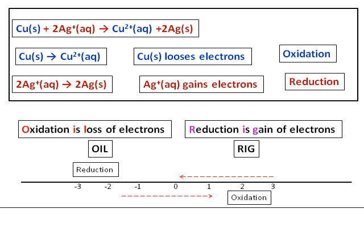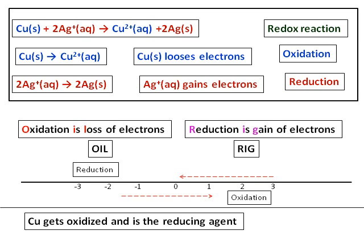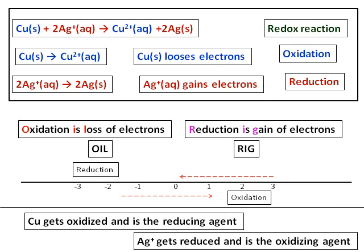Another thing which you have to know about this is this is the reaction in which both oxidation and reduction takes place. We call it as a redox reaction. And since copper is getting oxidized, it will be the reducing agent. And since silver plus is getting reduced, it will be the oxidizing agent.